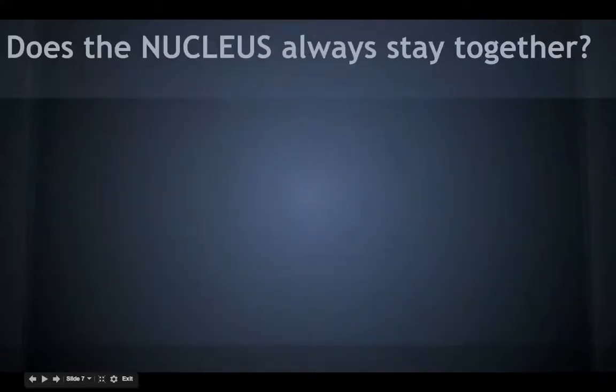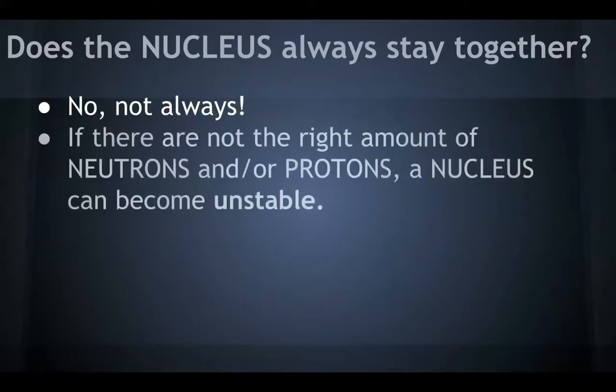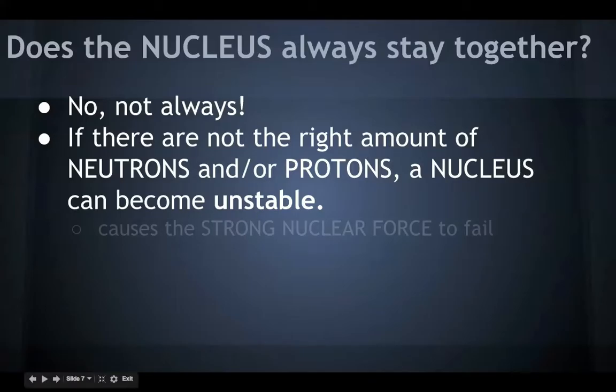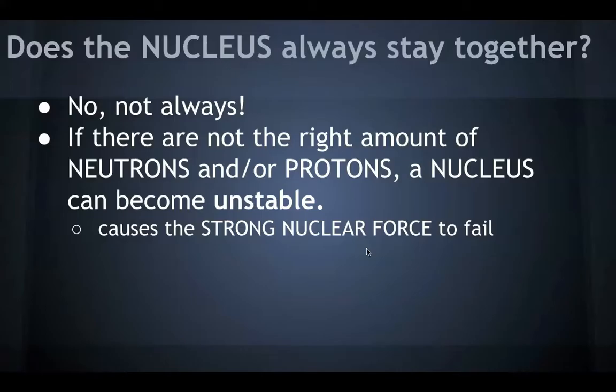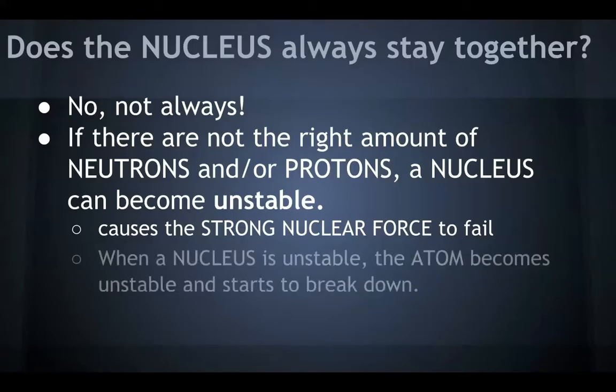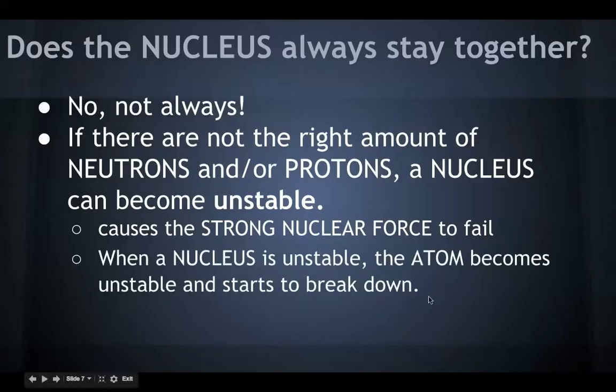Okay, does the nucleus always stay together though? The answer would be no, not always. If there are not the right amount of neutrons and protons in a nucleus, it can become unstable. This is caused by when the nuclear force fails. So if a nuclear force fails, it only has a certain amount of strength, eventually it will fail. When a nucleus is unstable, the atom becomes unstable, because the nucleus is unstable, and it starts to break down.